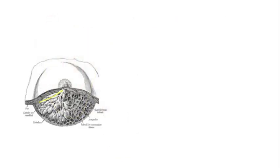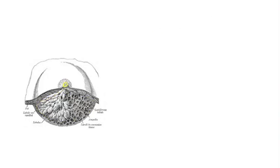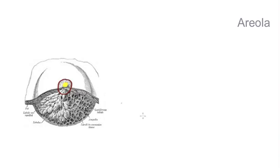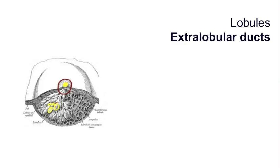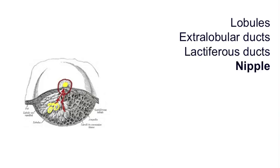The bulk of the breast contains mammary adipose tissue. At the centre of the breast lies the nipple, and around it the red pigmented skin of the areola. Milk is made in the lobules, which drain into extra-lobular ducts, and then in turn drain into the 15 to 20 lactiferous ducts, which drain to the nipple.